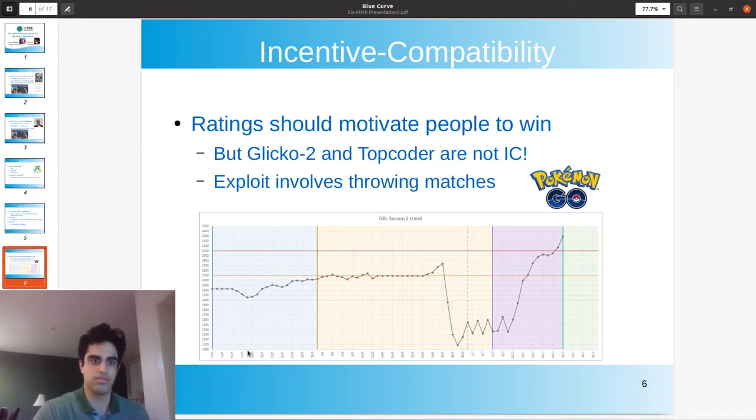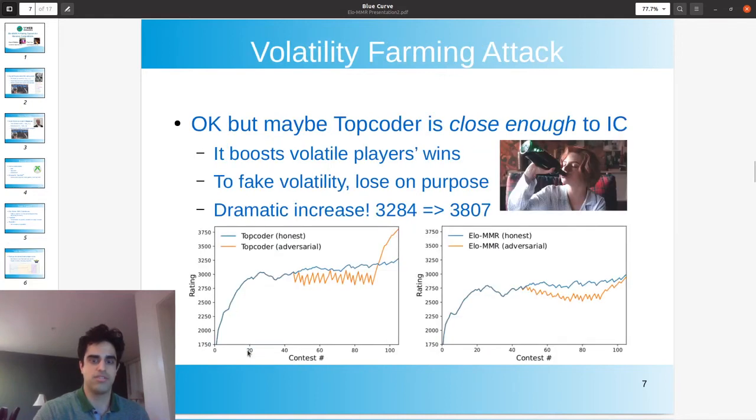So this is potentially a major problem. And in Pokémon GO, it is a major problem. In TopCoder, it wasn't yet clear just how bad the issue is. For all we knew, maybe the TopCoder system is almost incentive compatible, and maybe that would be okay in practice. We wanted to know.